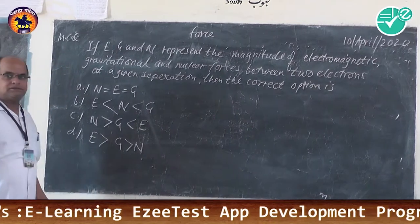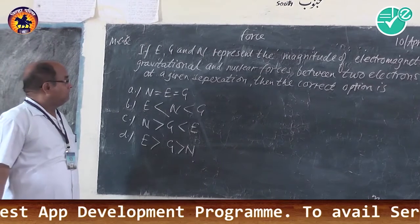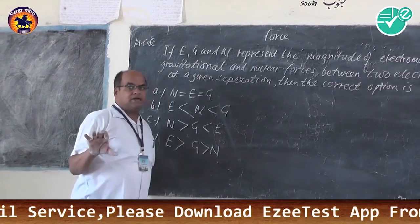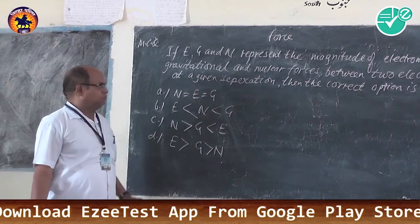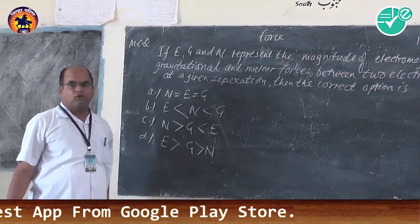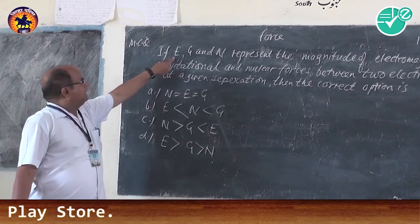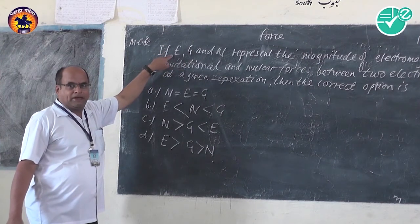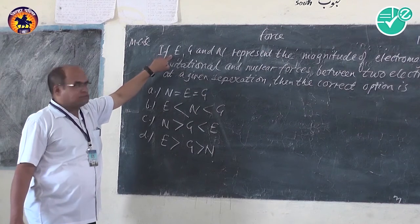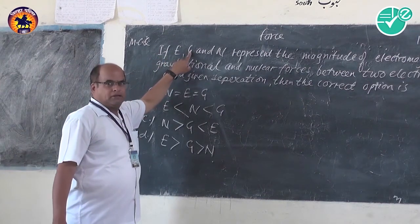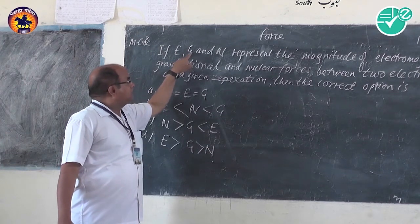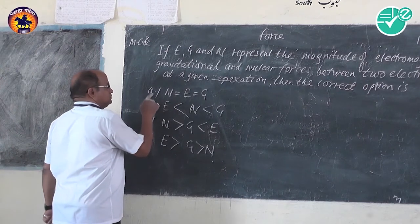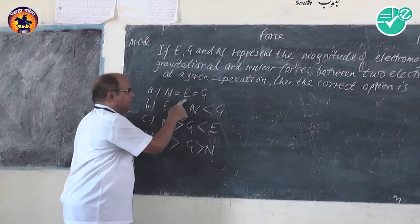The strong nuclear force is the strongest force, but since the force here is between two electrons, this is an example of weak nuclear force, and weak nuclear force is the weakest among electromagnetic force and gravitational force. Gravitational force is weaker than electromagnetic force.